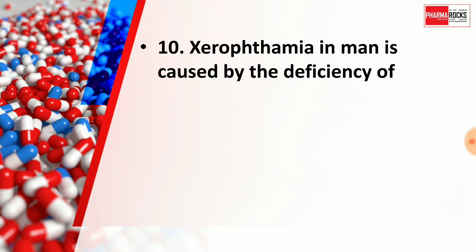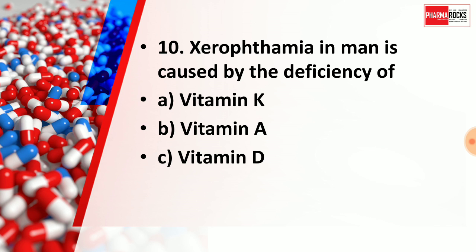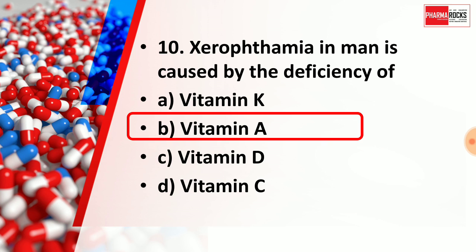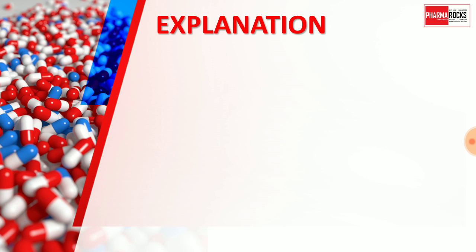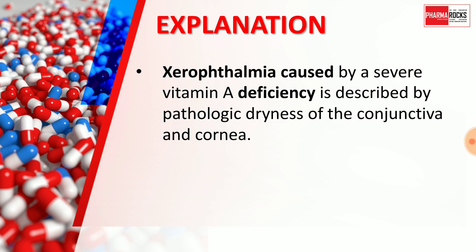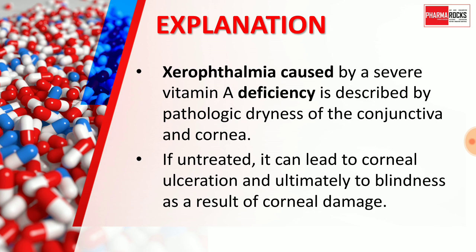Question number 10: Xerophthalmia in men is caused by the deficiency of — Option A: Vitamin K, Option B: Vitamin A, Option C: Vitamin D, Option D: Vitamin C. The right answer is Option B, Vitamin A. Xerophthalmia caused by severe Vitamin A deficiency is characterized by pathologic dryness of the conjunctiva and cornea. If untreated, it can lead to corneal ulceration and ultimately blindness as a result of corneal damage.